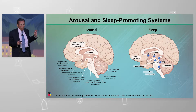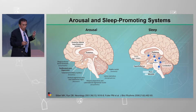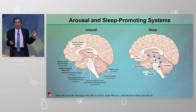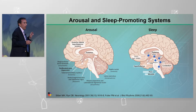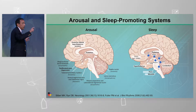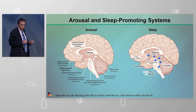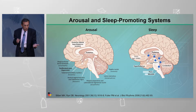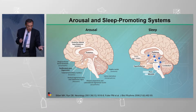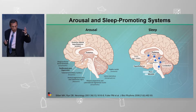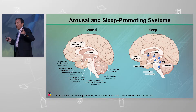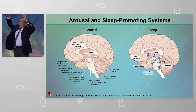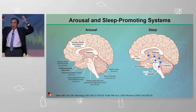Let's go over a couple of neurophysiologic systems to understand narcolepsy. On the left side is depicted the arousal system — the part of your brain which is keeping you awake right now. What is that innervated by? Acetylcholine, histamine, dopamine, norepinephrine, serotonin — all of these occur in an ascending pathway all the way to the cortex to keep us awake.